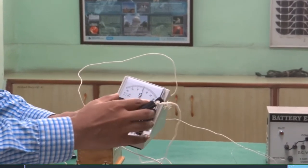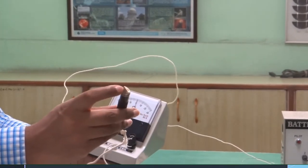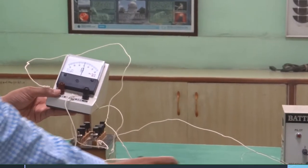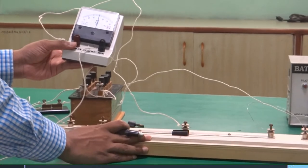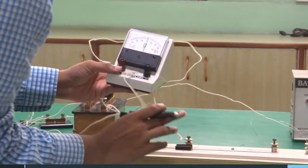Since the circuit is closed, now the deflection is at zero. This is a jockey. It has got a metallic edge. When it touches on this wire, you can see this wire is known as a meter bridge because the length of the scale is 100 cm, which is equal to 1 meter.